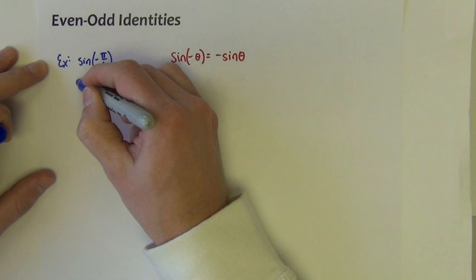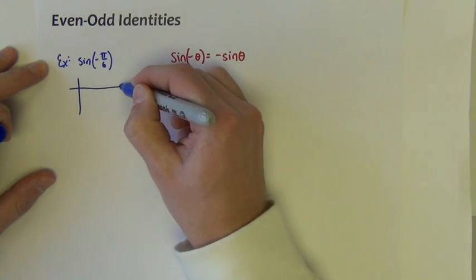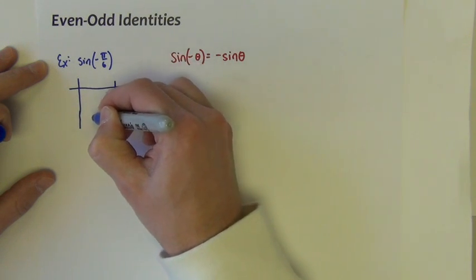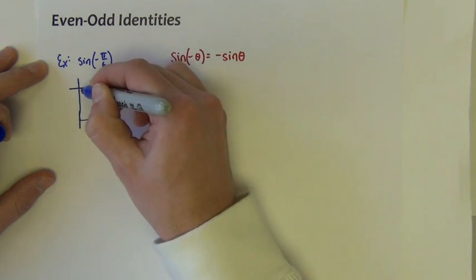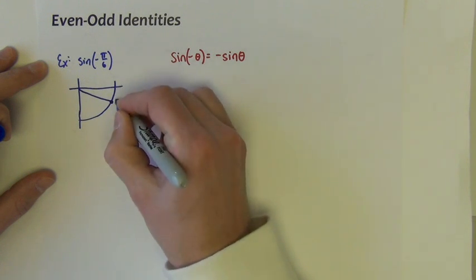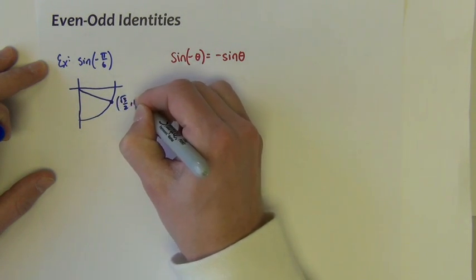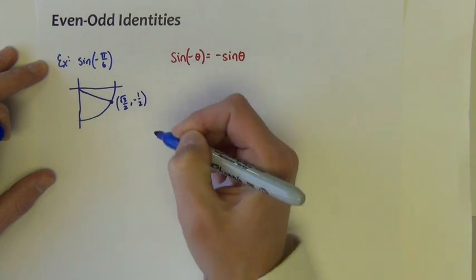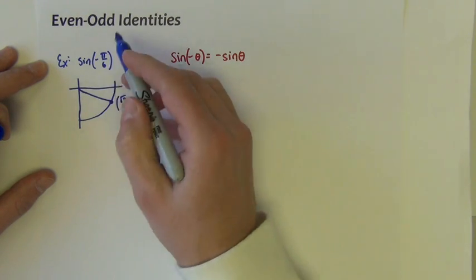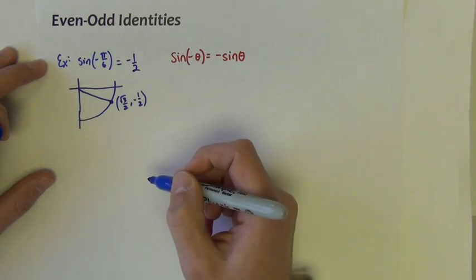The sine of negative pi over 6 — thinking about the unit circle — negative pi over 6 is this point right here. It's the point at square root 3 over 2, negative 1 half. So if I wanted the sine of negative pi over 6, it's the y-value of that point, it's negative 1 half.